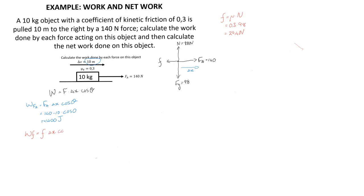We can also calculate the work done by the friction force, which is the product of the friction force, the displacement, and the cosine of the angle between them. Friction is 29.4 newtons and the displacement is 10 meters. Since friction and the motion of the object are opposite to each other, the angle between them is 180°, giving us negative 294 joules. A negative work value tells us that energy has been removed from the system.